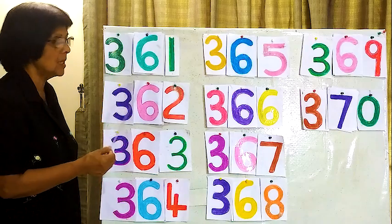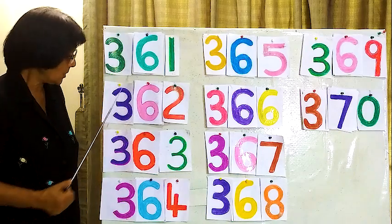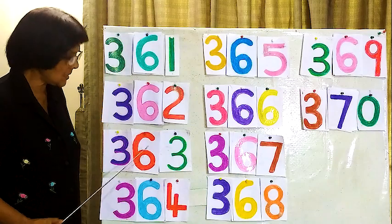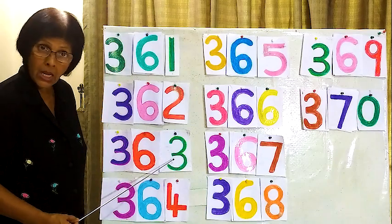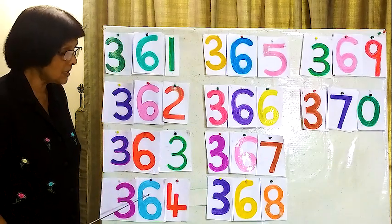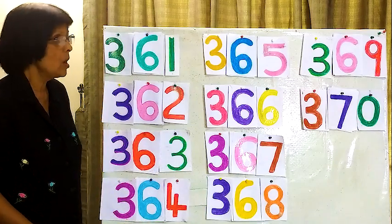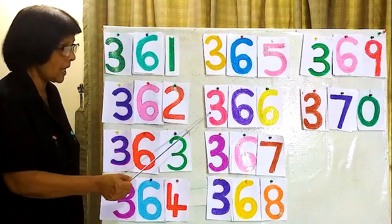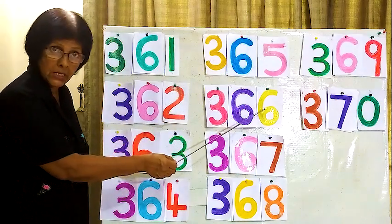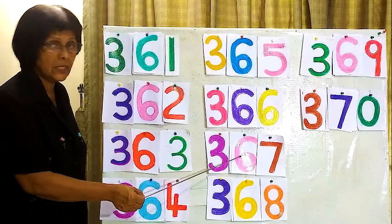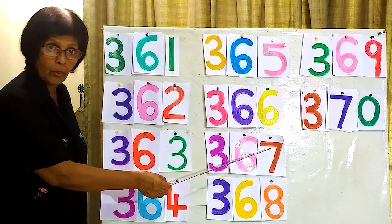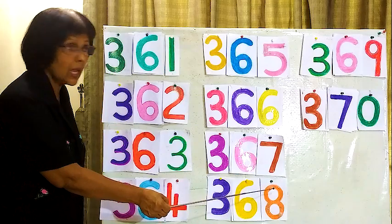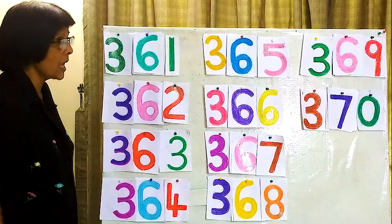We will read from the first number again: 361, 362, 363, 364, 365, 366, 367, 368.